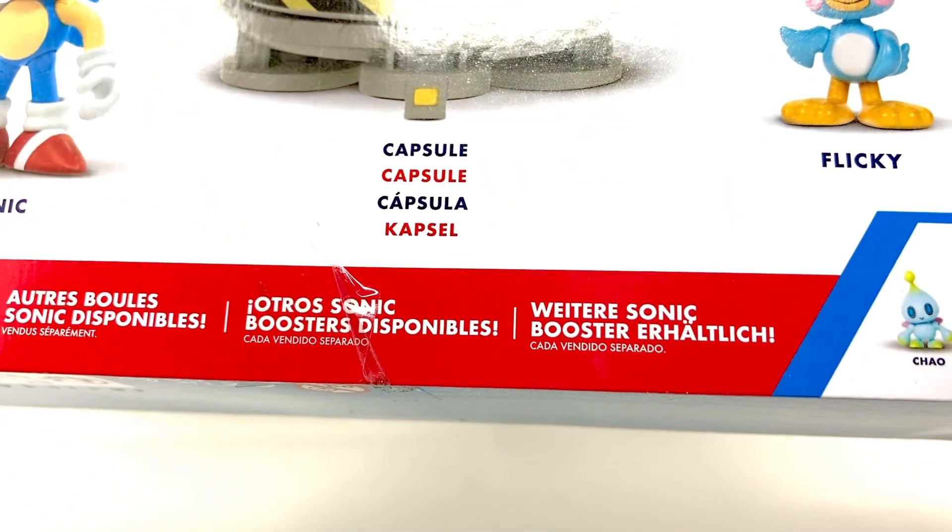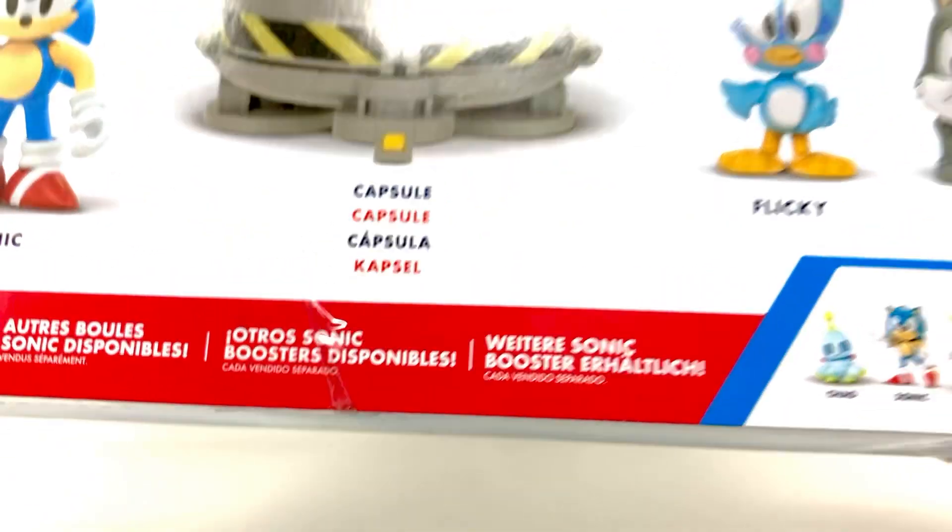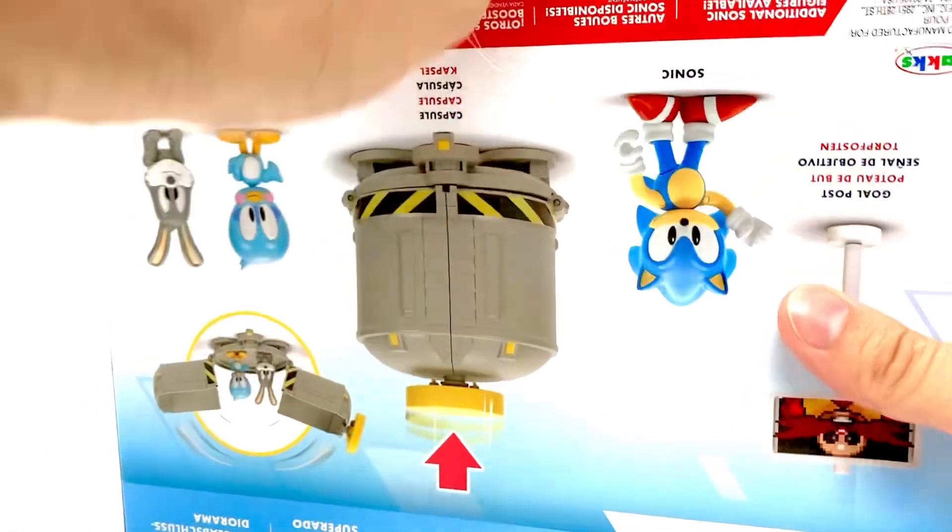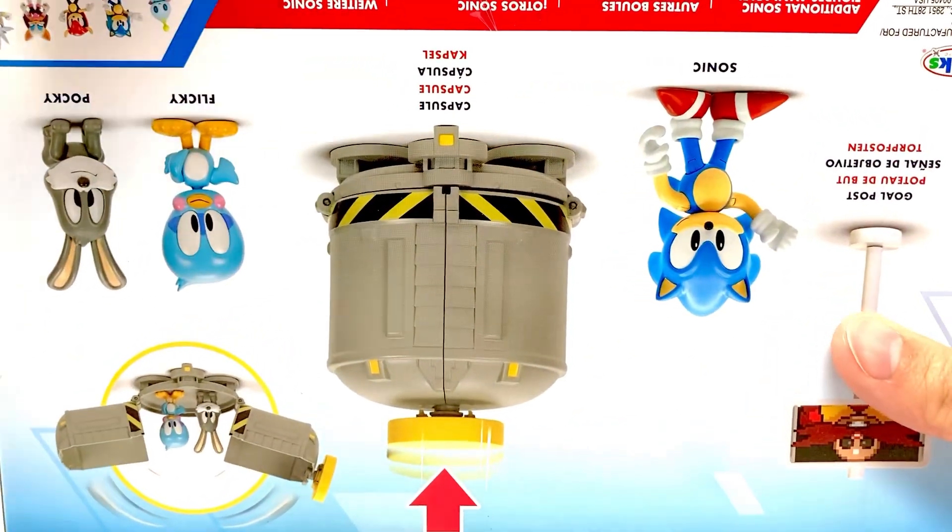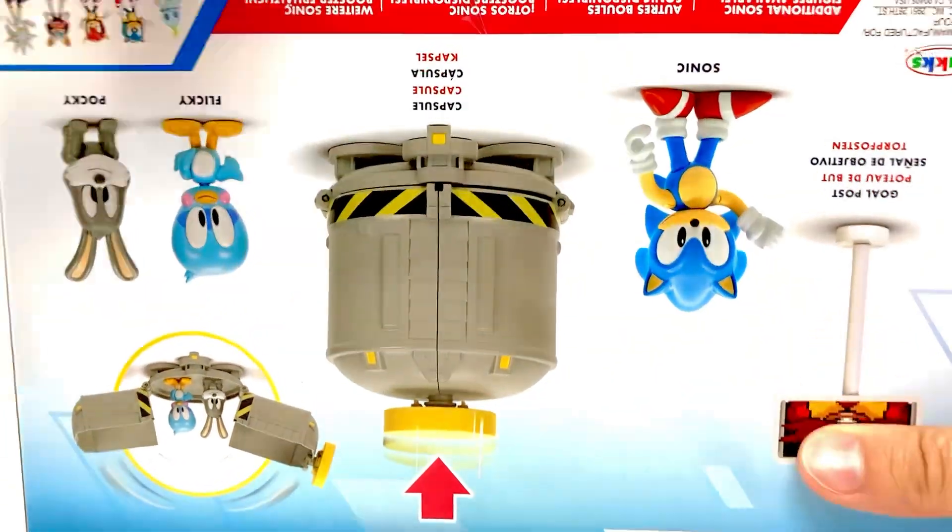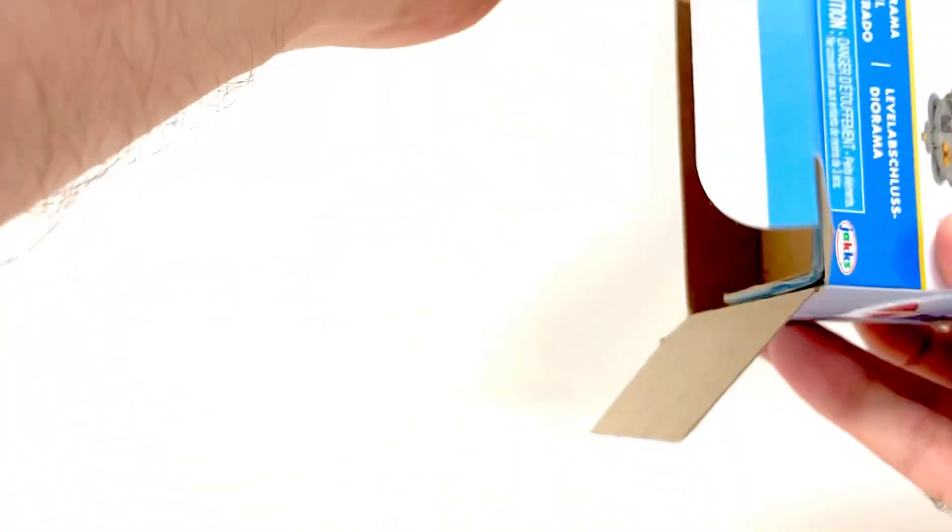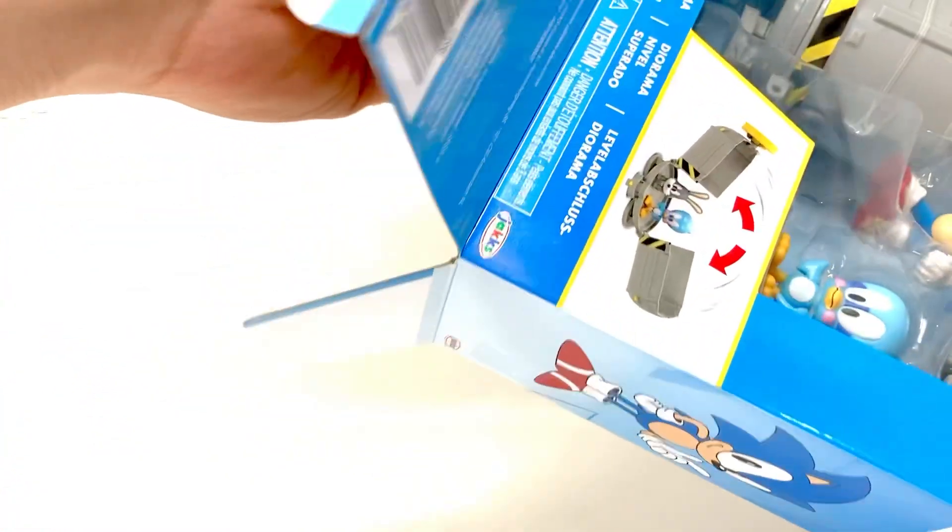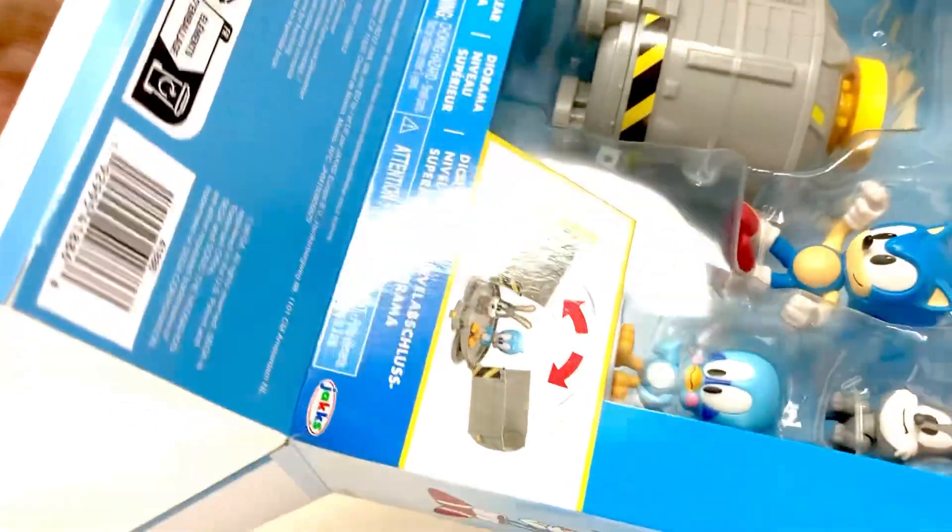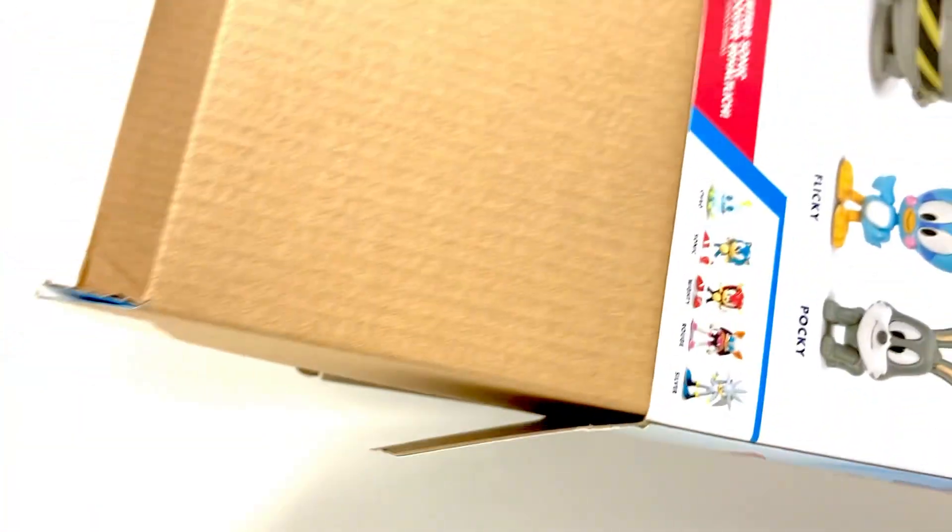Yeah, so anyways let's get this out and check it out. I'm loving these Classic figures. I do wish they would do a line based on the classic cartoon with Robotnik and Scratch and Grounder, Coconuts and things like that. I don't think that's going to happen. Oh my god, this thing will not come on. There we go.